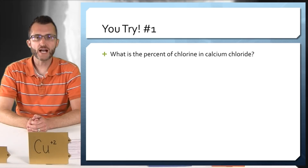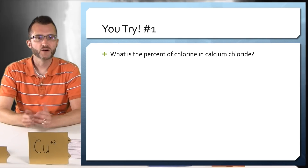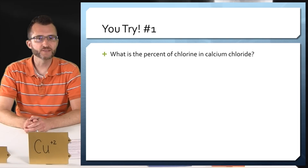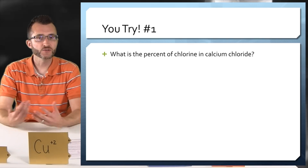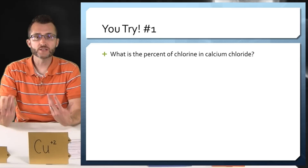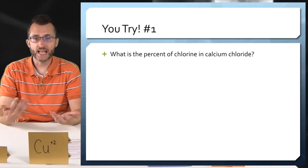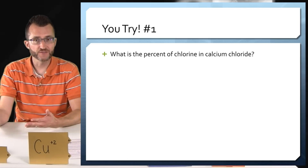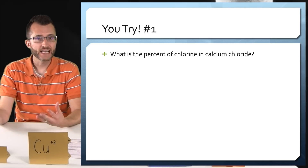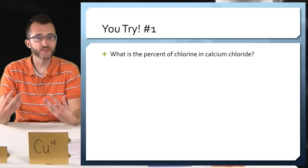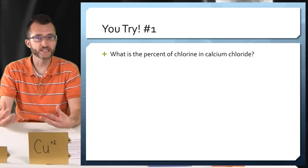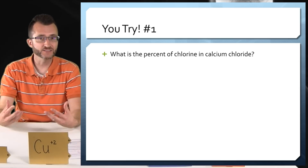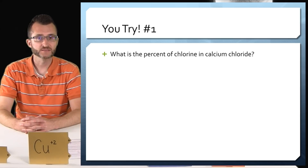You try number one. What is the percent of chlorine in calcium chloride? You're going to find the chemical formula, then find the formula mass, and you only have to find the percent of chlorine — not calcium — in this compound.